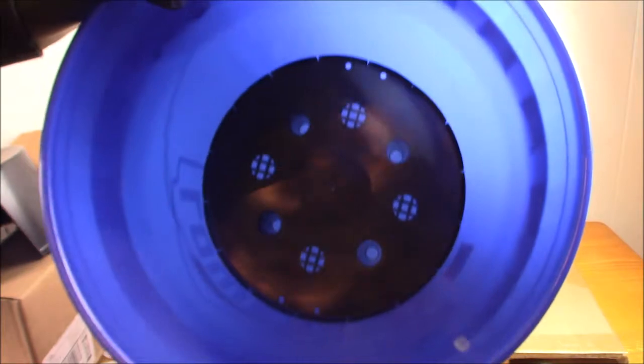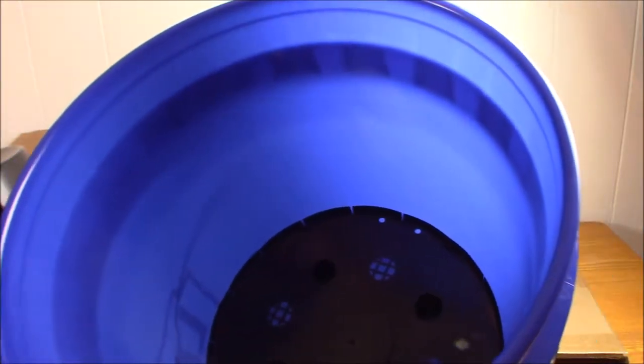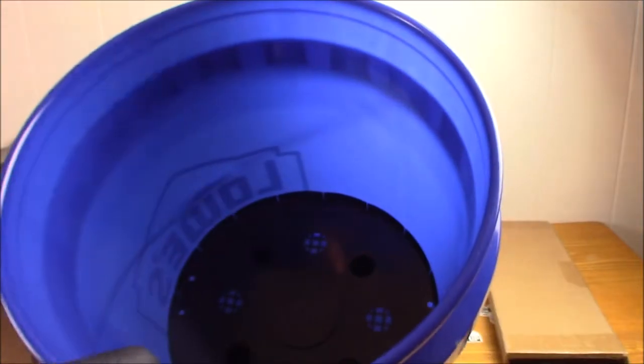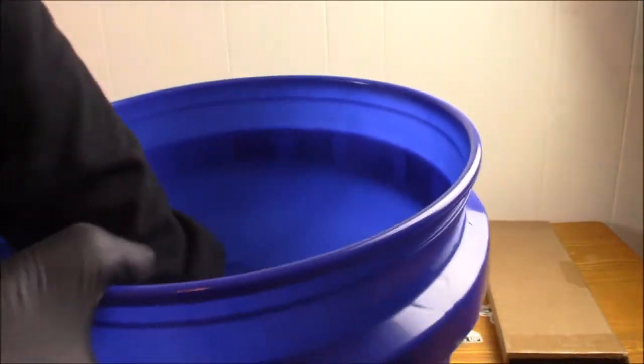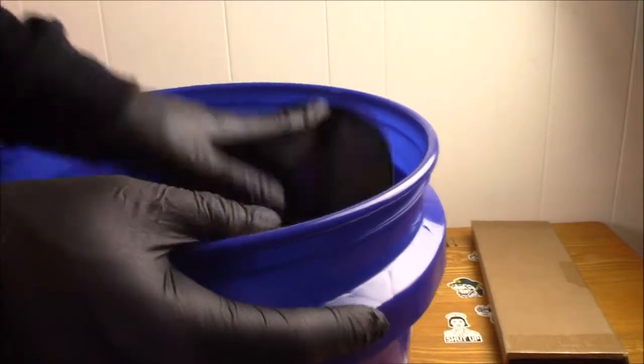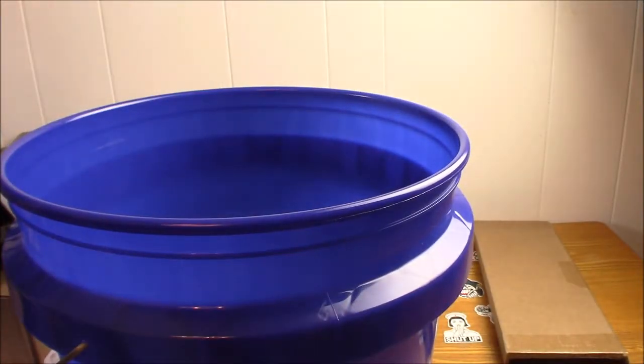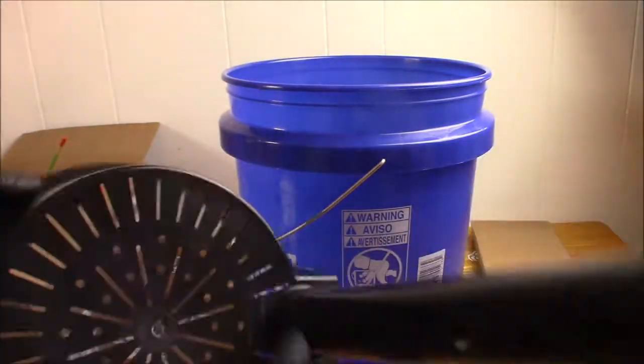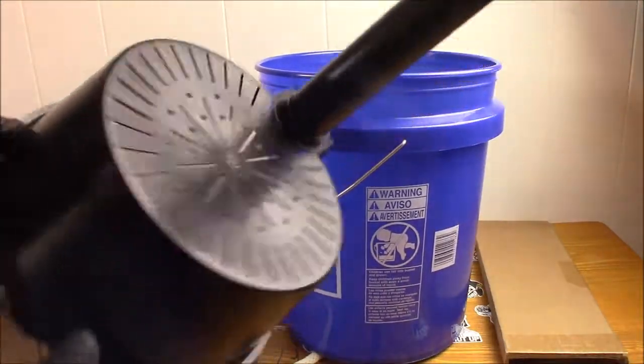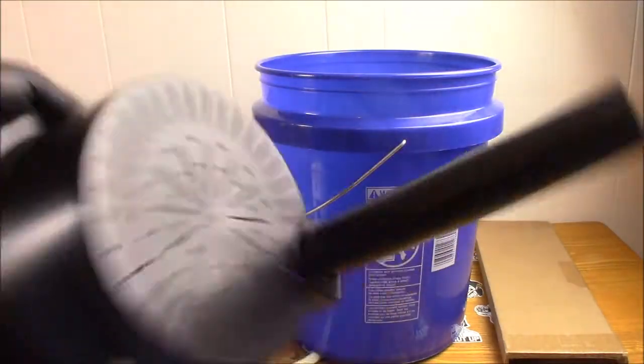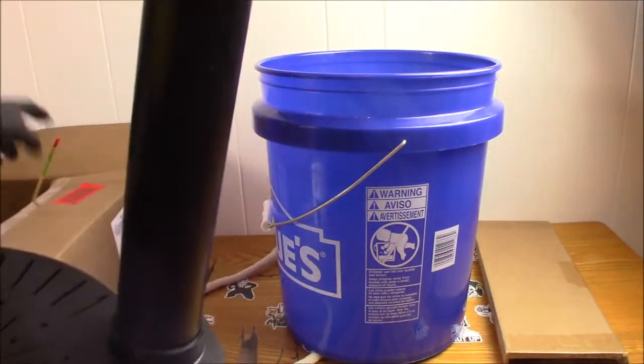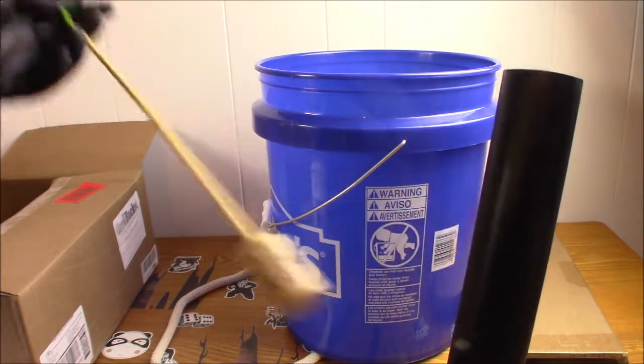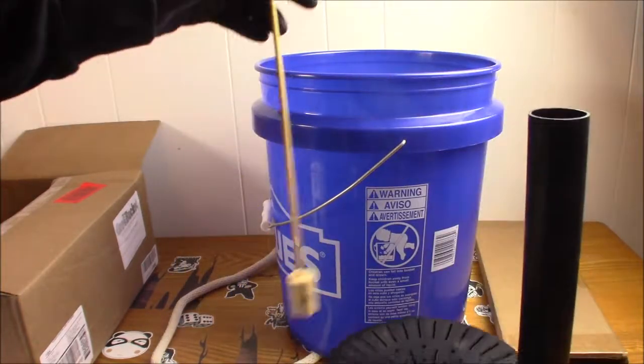Then you put your hole in so it doesn't overfill, and you got yourself a self-watering grow bucket. Remember, this version is cheaper than the Grow Bucket version. The Grow Bucket version is more expensive but it has more accessories with it, including the fill pipe, the base, and water level indicator.